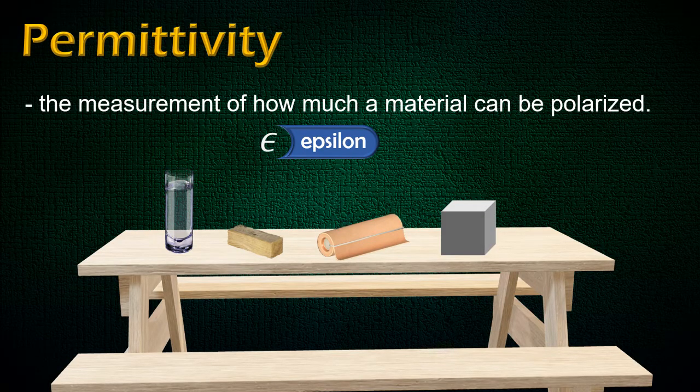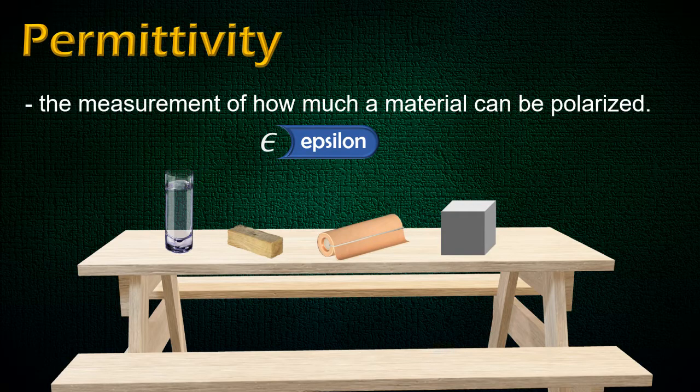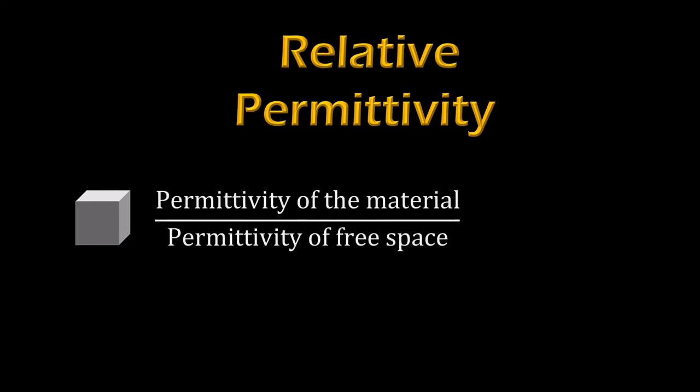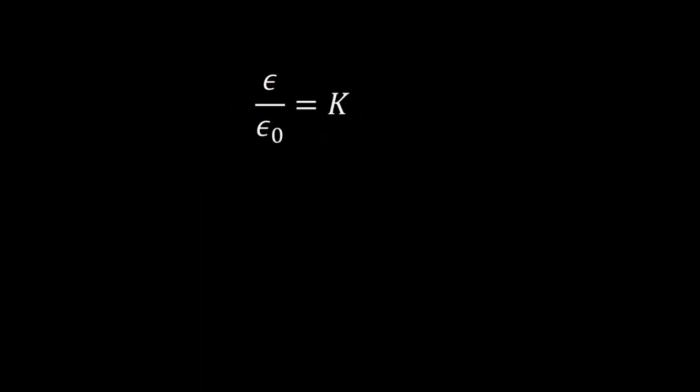But in general calculations, we don't use absolute permittivity of the material. Instead of that, we use relative permittivity, which is the ratio of permittivity of material with the permittivity of free space. And we have another name for this ratio, dielectric constant, which is generally symbolized as K. Now if we rearrange this equation, we can say that the permittivity of any material can be written as the product of dielectric constant of the material and the permittivity of free space.